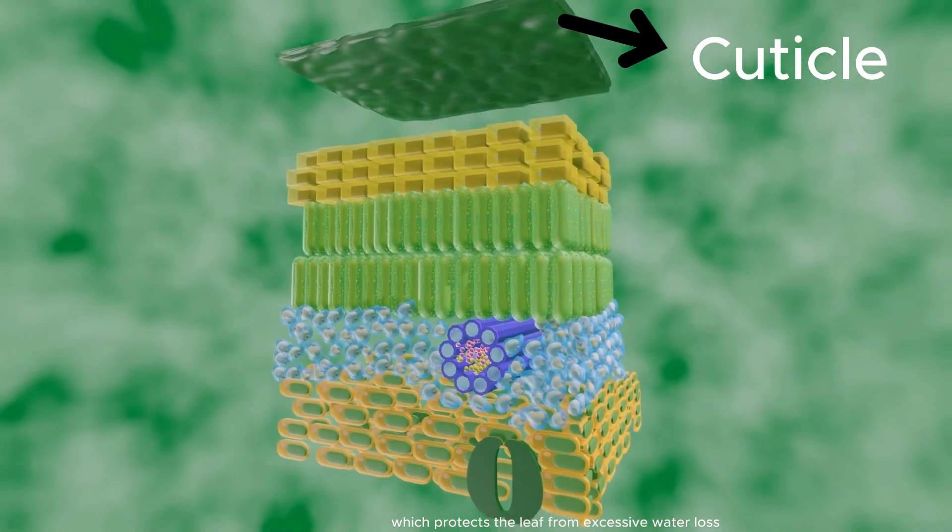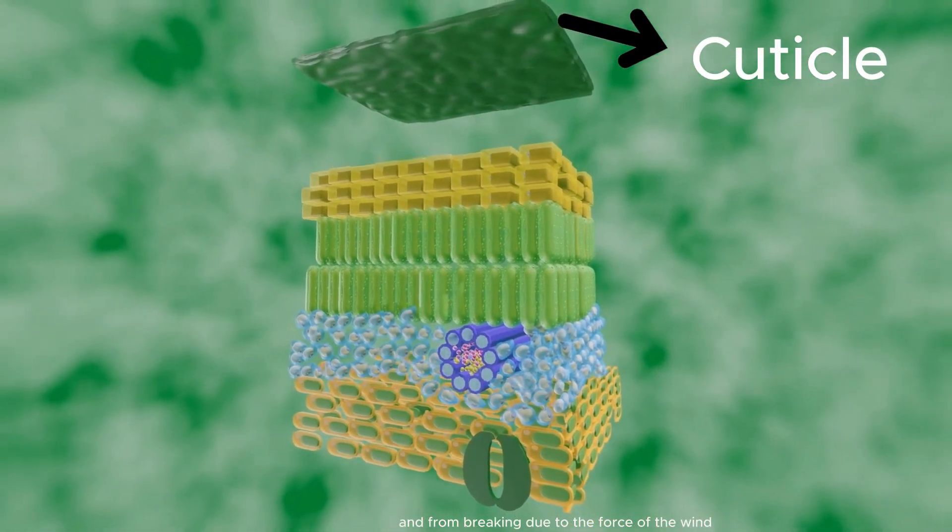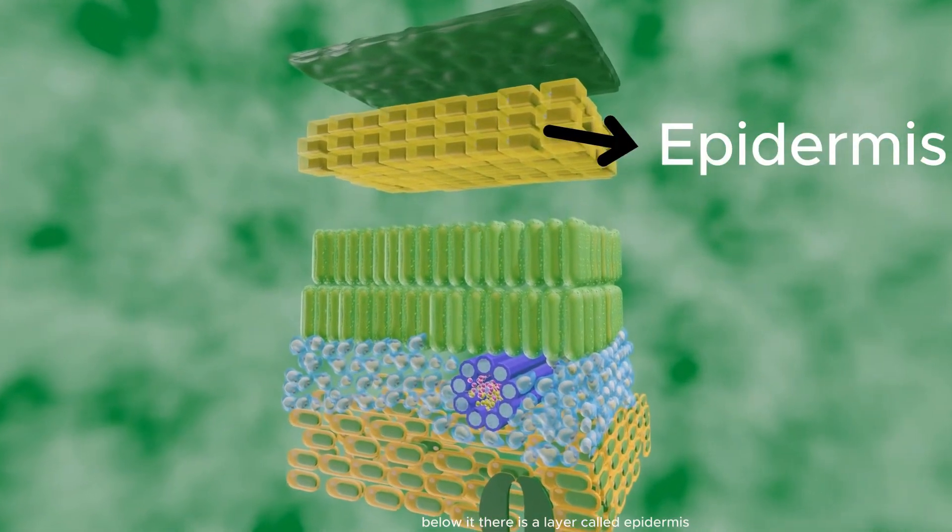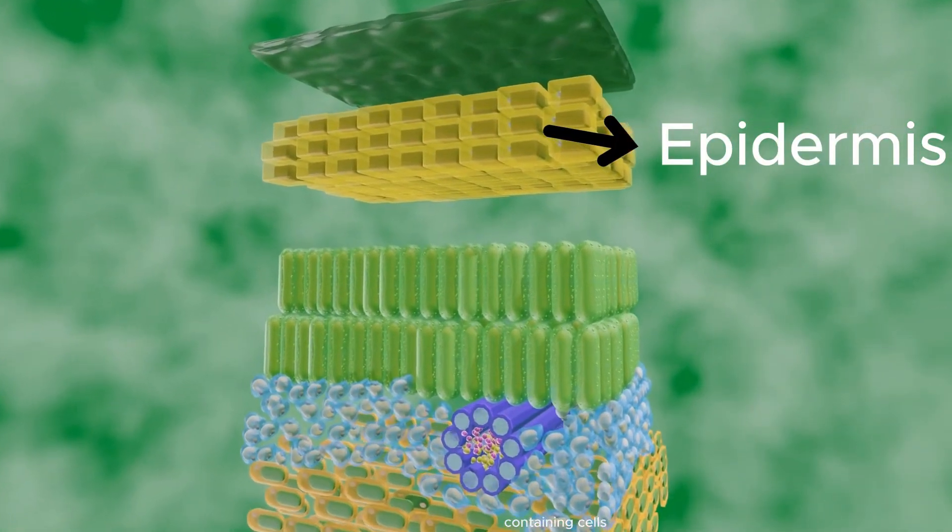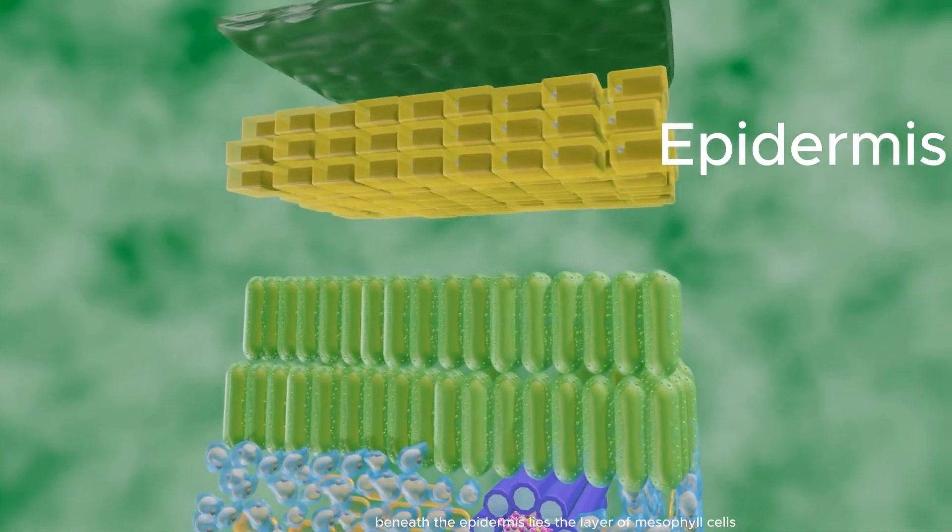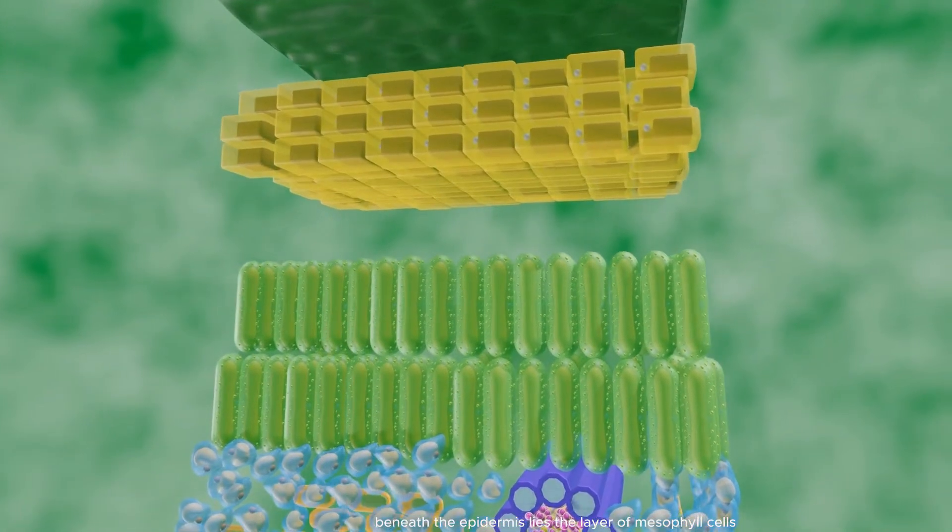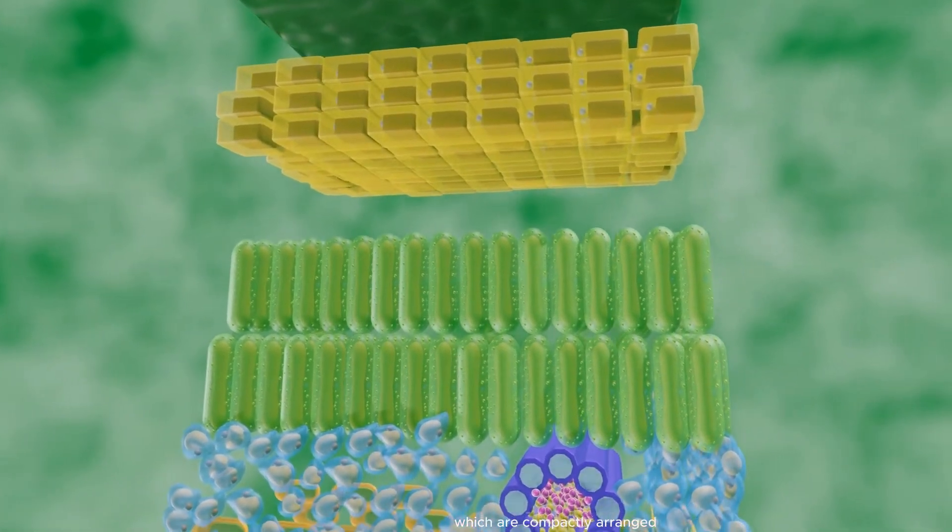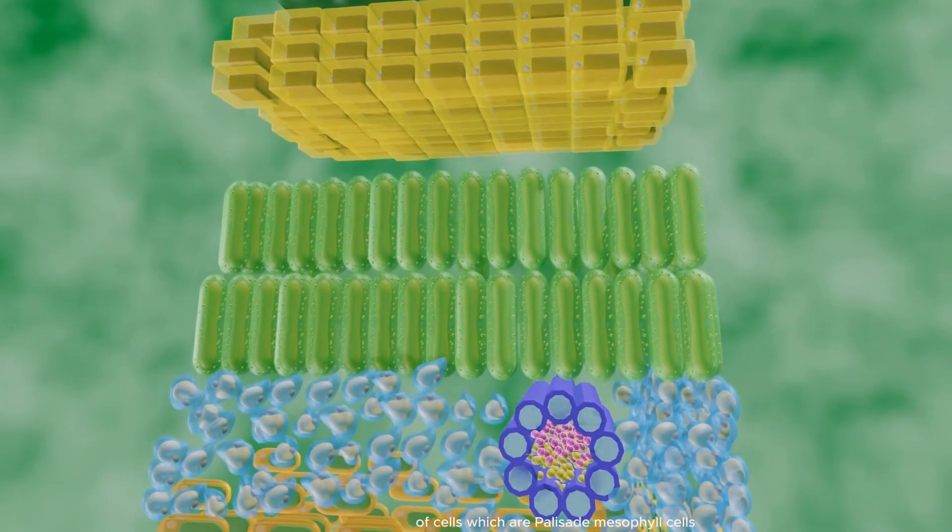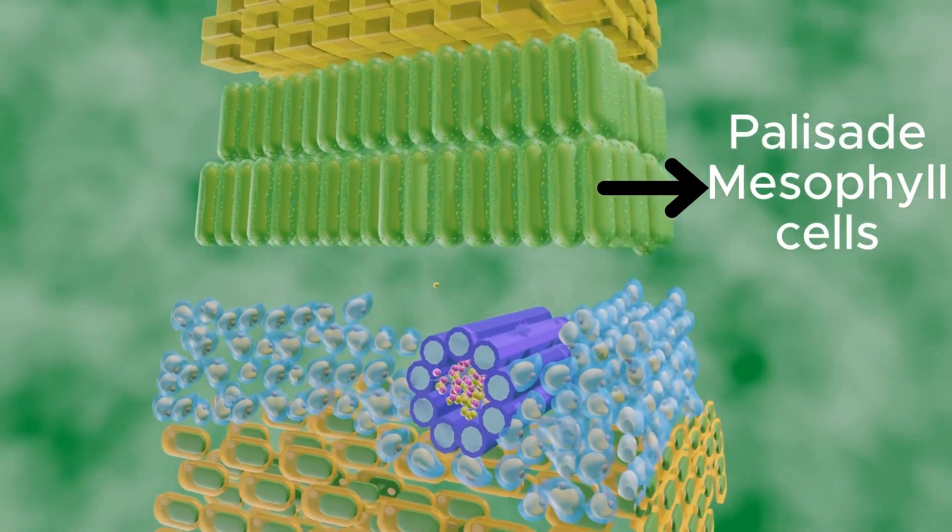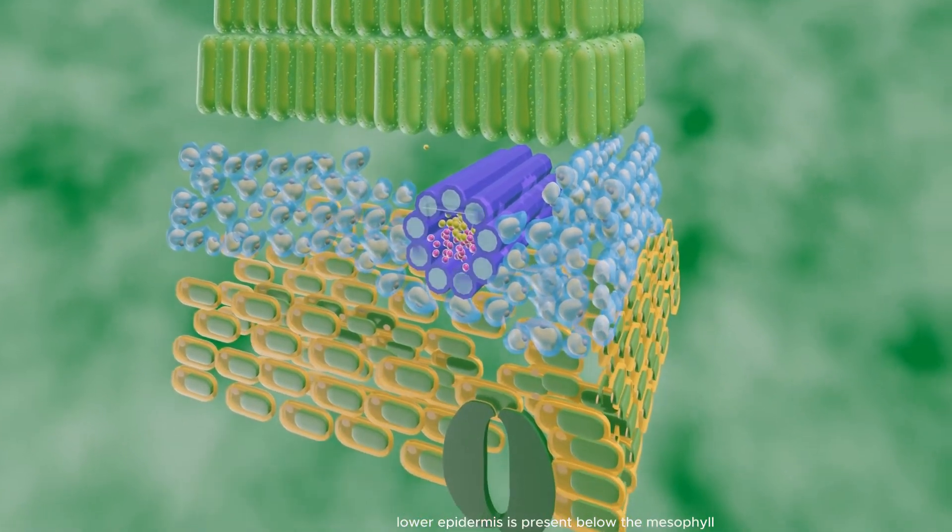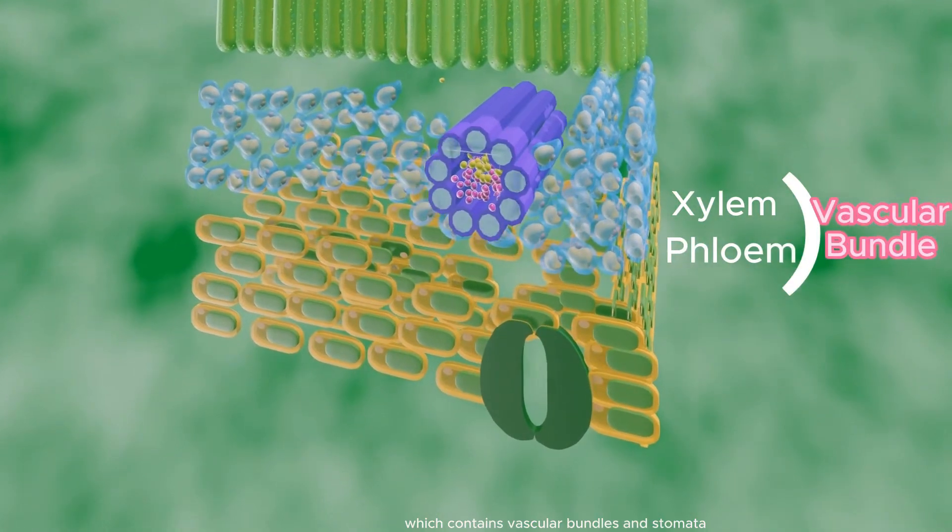The cuticle protects the leaf from excessive water loss and from breaking due to the force of the wind. Below it there is a layer called epidermis which contains chlorophyll-containing cells and pores for exchange of gases and water. Beneath the epidermis lies the layer of mesophyll cells which are compactly arranged. The mesophyll layer contains two types of cells: palisade mesophyll cells and spongy mesophyll cells. Lower epidermis is present below the mesophyll which contains vascular bundles.